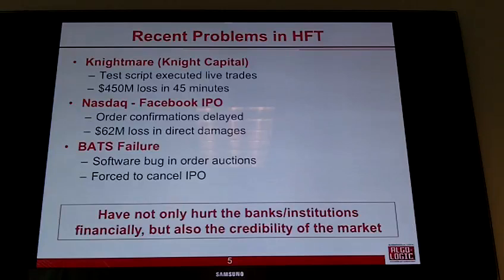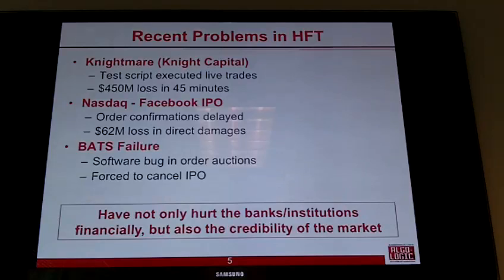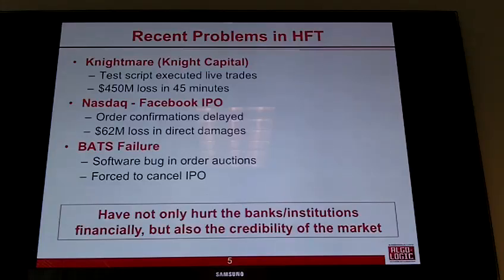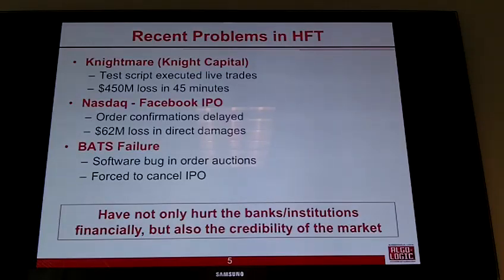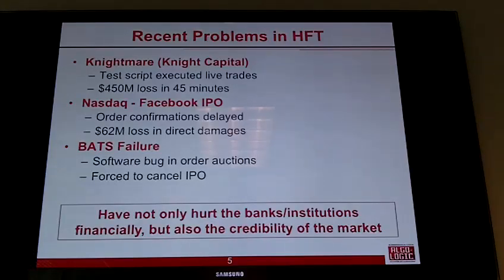The NASDAQ Facebook IPO was another disaster — $62 million in direct damages on the day Facebook launched its IPO because they couldn't price it that morning. They couldn't compute what price it should start trading at, and they didn't give order execution reports back to people who had placed orders. No one knew what they owned when Facebook went public. NASDAQ is likely to pay out $62 million to cover their software glitch.